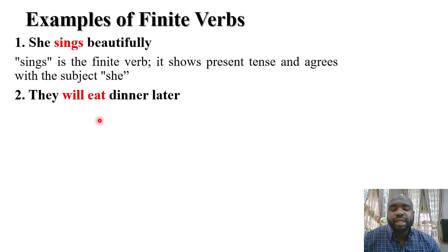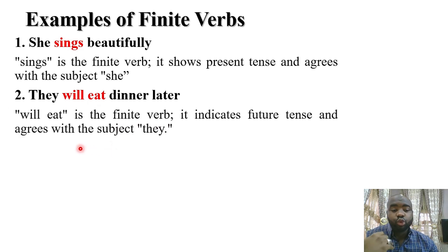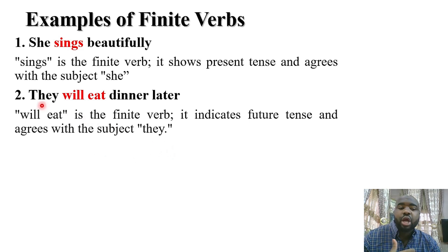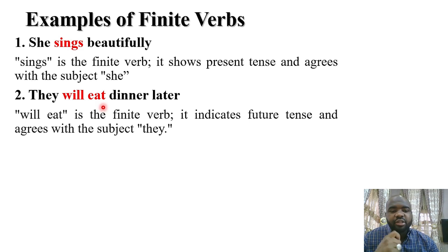Example two: 'They will eat dinner later.' The verb 'will eat' signifies future tense. It is also finite because it shows indication of time — future tense. It also agrees with the subject 'they,' which is plural, and that is why we have the base form of the verb 'eat.'